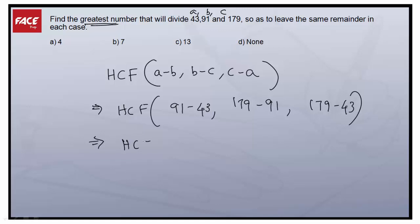Basically when we subtract: 91 minus 43 is 48, and 179 minus 91 will be 88, and 179 minus 43 will be 136. So we have to find the HCF of 48, 88, 136.